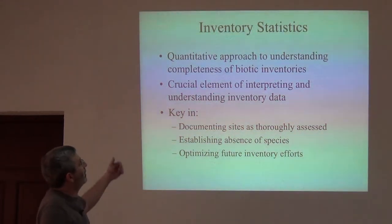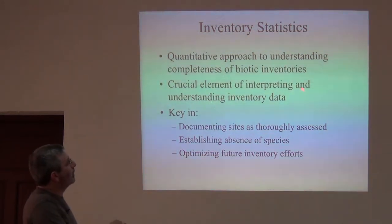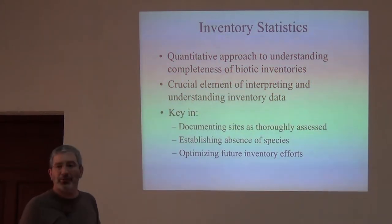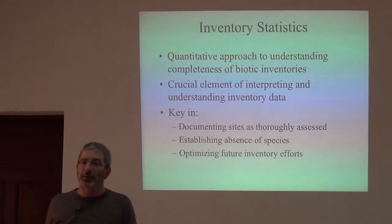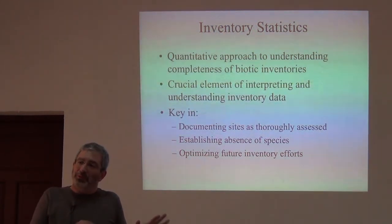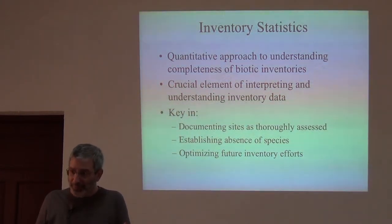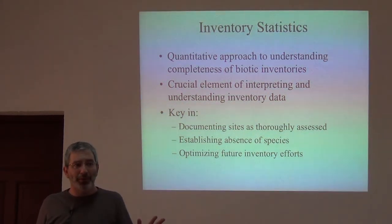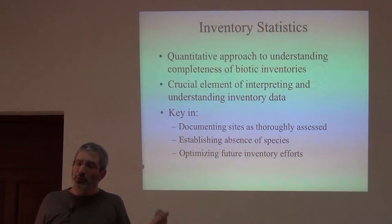Inventory statistics — it's a quantitative approach to understanding completeness of biotic inventories. It's a crucial element of interpreting and understanding inventory data, and it is very key in deciding when a site is thoroughly assessed, in establishing absence of species, and in optimizing your inventory efforts. These statistics are pretty important. If you want to publish a paper on the herps of Korup National Park or the plants of your study area back home, you really should be including a fairly detailed analysis using these statistics.